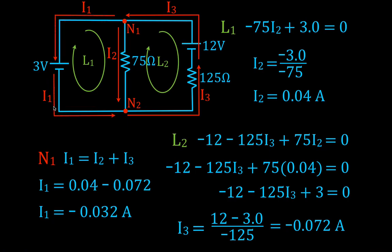That gives us the directions and magnitudes of all currents. I1 is 0.032 amperes and flows in the counterclockwise direction. I2 is 0.04 amperes and flows from N1 to N2. I3 is 0.072 amperes and also flows in the counterclockwise direction. It's a little bit of physics with summing up the laws, but then it becomes algebra — making sure you don't forget your negative and positive signs.